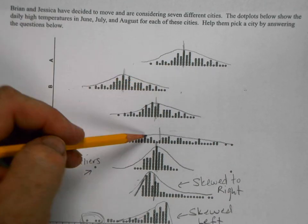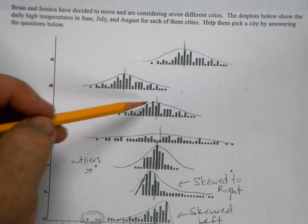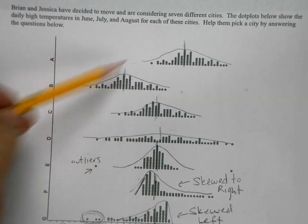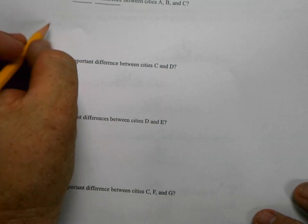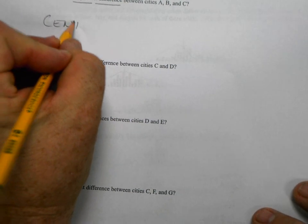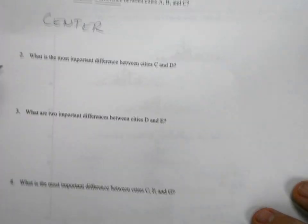Because the center tells us that their mean average temperature is 90, 80, and 70. So this city is much cooler. We're looking for the most important difference. On those would be the center.